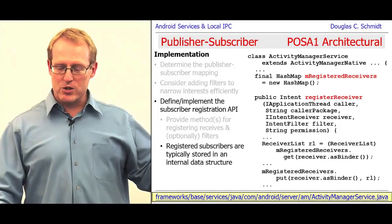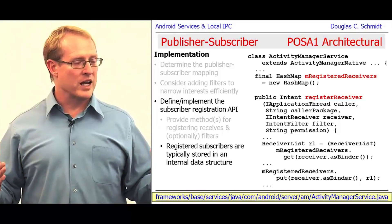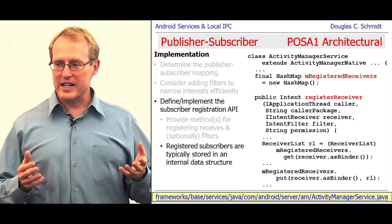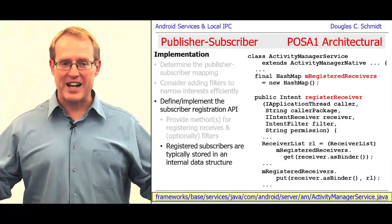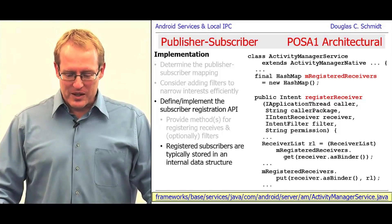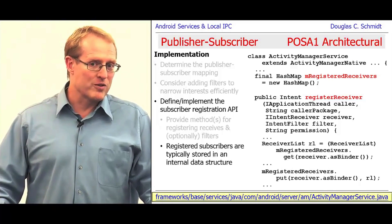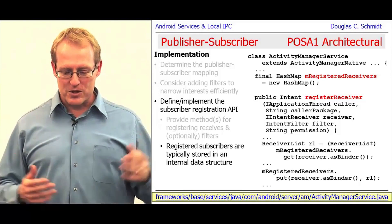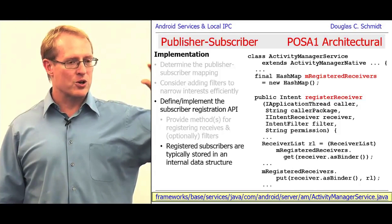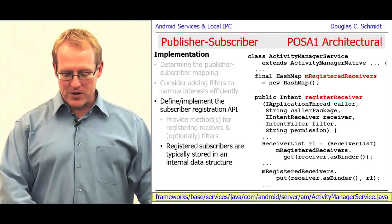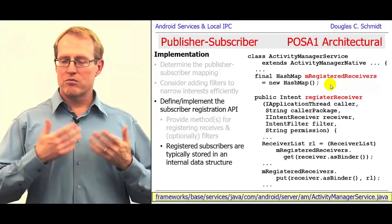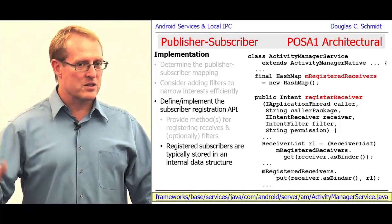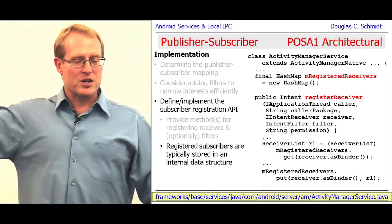These subscriptions and registrations you make of the receivers are typically stored in some kind of internal data structure. In Android, there's a very complicated mechanism for doing this called the Activity Manager Service, which is about 16,000 lines of code or more. There's a method called register receiver in there that's non-trivial. Basically, it builds a hash map called mRegisteredReceivers, which keeps track of who's registered for which different kinds of things. When you call register receiver, it checks if this particular receiver is already registered, adds it to a linked list, and sticks it into the hash map. So you can end up with multiple receivers registered for the same intent.